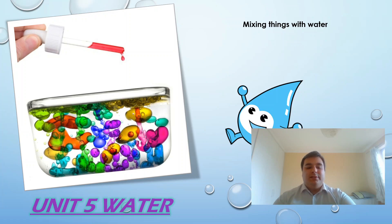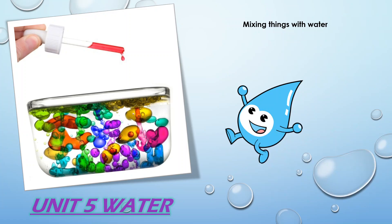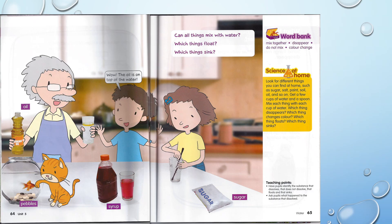Let's start with this class. Please open your My Pals Are Here 2A student book on pages 64 and 65. As you can see, our friends are in a kitchen and they have different elements. Let's read the questions first.